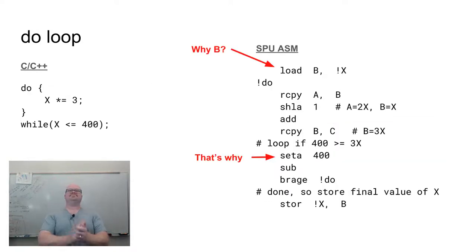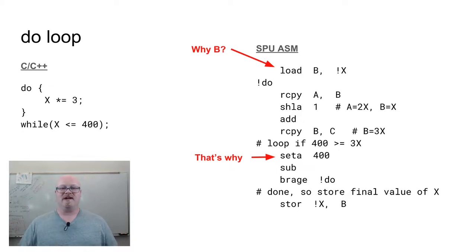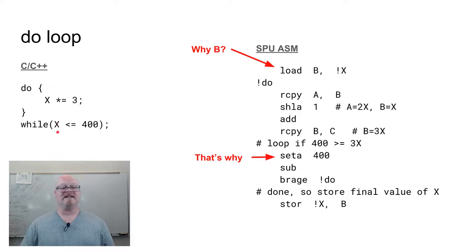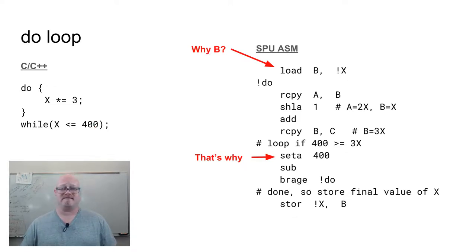Now let's look at looping — specifically a do loop. This is a loop where we know we're going to run at least one iteration, and then consider whether to run more. In this do loop, we multiply a variable x by 3, and keep doing that as long as x is less than or equal to 400. We'll definitely do it at least once — x could already be greater than 400 and it doesn't matter.